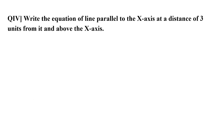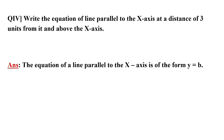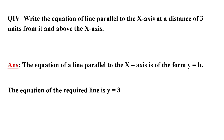Question number four: write the equation of the line parallel to the x-axis at a distance of 3 units from it and above the x-axis. A line parallel to the x-axis has equation of the form y equal to b. Since the line is 3 units above the x-axis, and above means positive, the equation of the required line is y equal to 3. If it were below the x-axis, the value would be negative, but here it is above, so y equals 3.